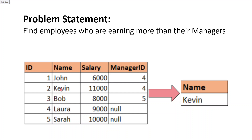Coming to Kevin, he is earning 11000 and is reporting to manager 4, which is Lara. Lara is earning 9000, which means Kevin is earning 11000 while Lara is earning 9000 — so Kevin is earning more than his manager. This is the expected output. We have only 5 records in this simple dataset, but in real time we might have more records. The output should be Kevin because he is the only person earning more than his manager.